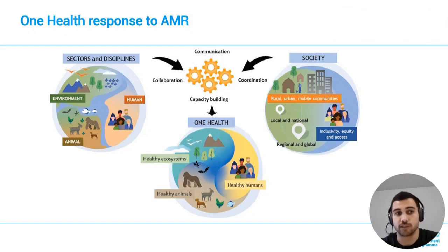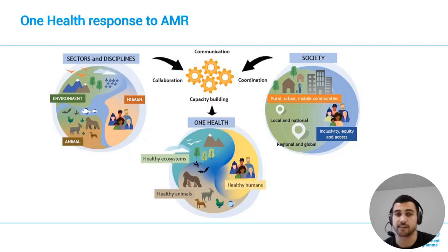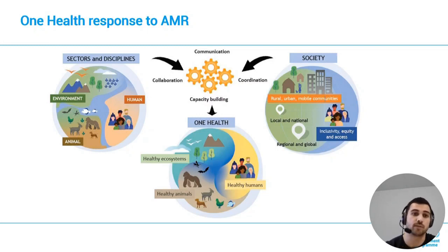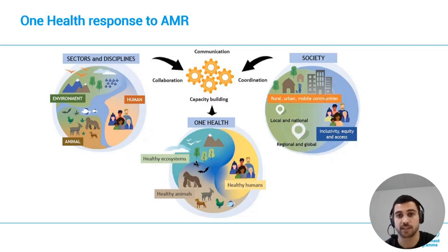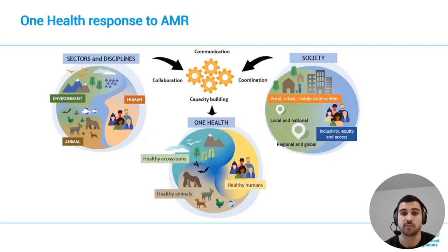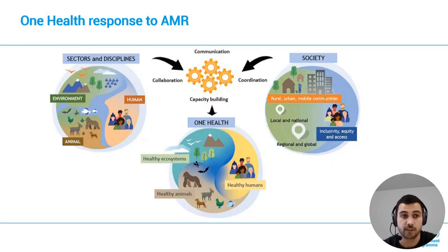Global attention to AMR has historically been focused on human health and the agriculture sectors. But there is growing evidence that the environment plays a key role in the development, transmission, and spread of AMR. The environmental dimensions of AMR are complex, characterized by dynamic interactions that impact global planetary health. Using the One Health approach, which recognizes that the health of people, animals, plants, and the environment are closely linked and interdependent, we can successfully address AMR.